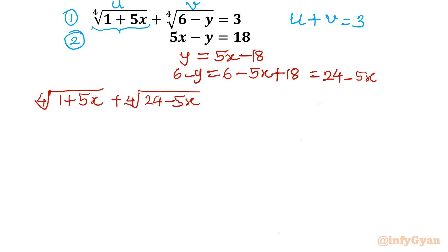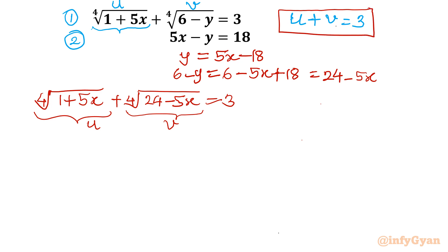Our assumption is that the fourth root of (1 + 5x) is u and the fourth root of (24 - 5x) is v. So for the second equation, I can frame it as u⁴ plus v⁴. Once you add both expressions, that comes out to 25.